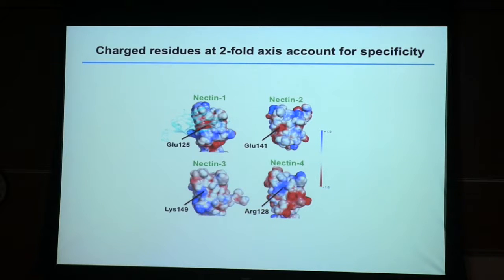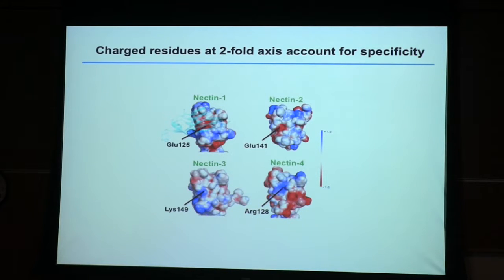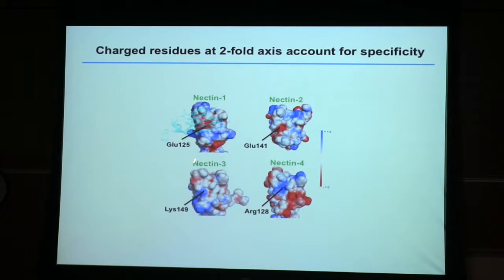The way these proteins are designed is very clever and simple. If you want to design a heterophilic protein, put a charge there. On the protein it binds to most strongly, have an opposite charge. If these two proteins dimerize, you'll have a negative region interacting with another glutamate — there'll be some repulsion — but in the case of nectin-3, there's a lysine, so there'll be an attraction. That's a very nice way of designing heterophilic proteins, and this is the way the nectins work.